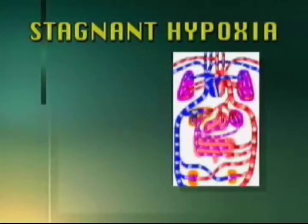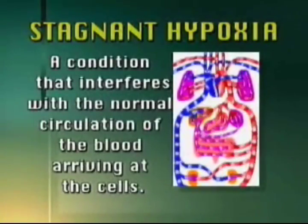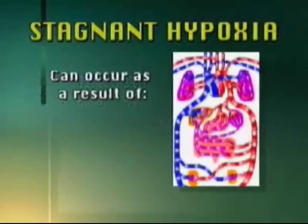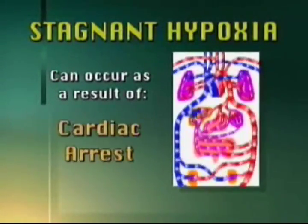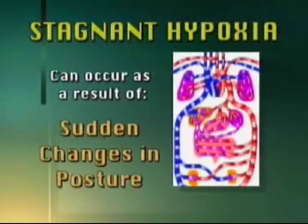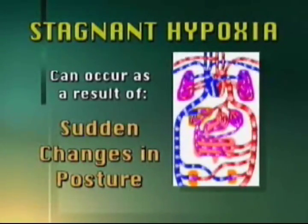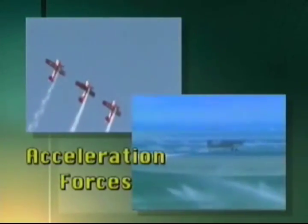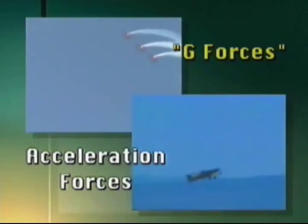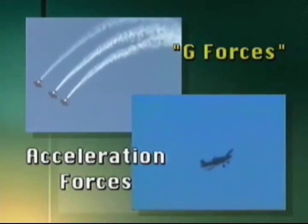Stagnant hypoxia occurs at the circulatory level. It is defined as a condition that interferes with the normal circulation of the blood arriving at the cells. Stagnant hypoxia can occur as a result of cardiac arrest, shock, exposure to cold, and sudden changes in posture, such as standing up after a prolonged rest. Aerobatic and agricultural flying expose pilots to acceleration forces, commonly called G-forces, that can result in this type of hypoxia at the brain level.